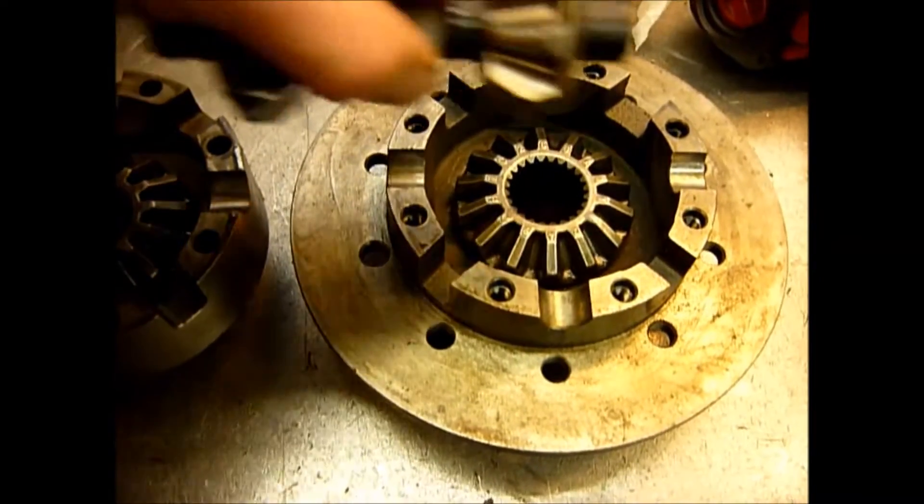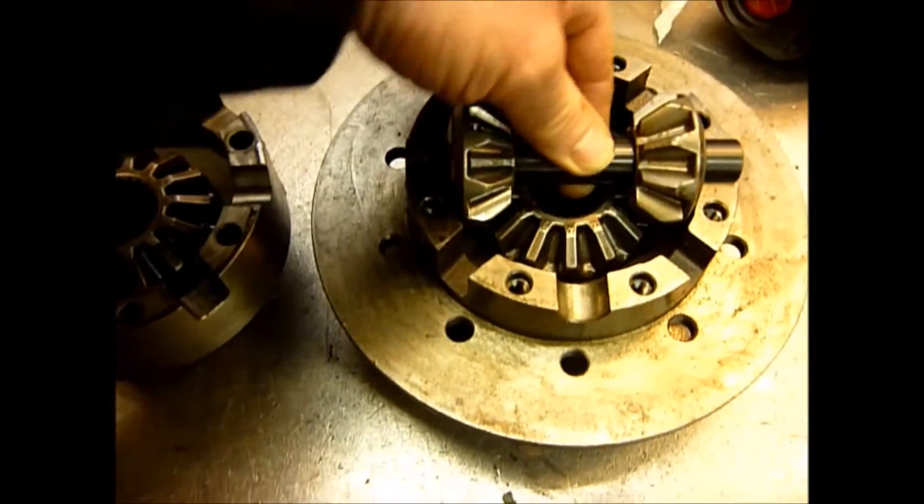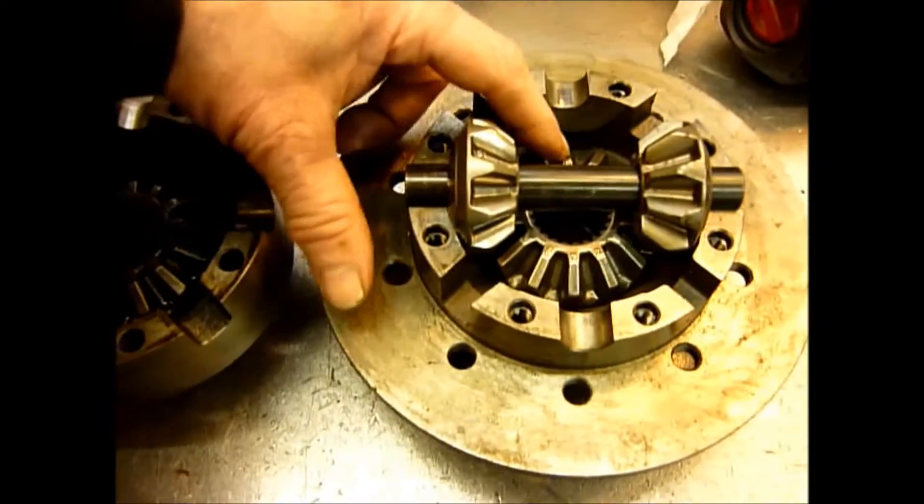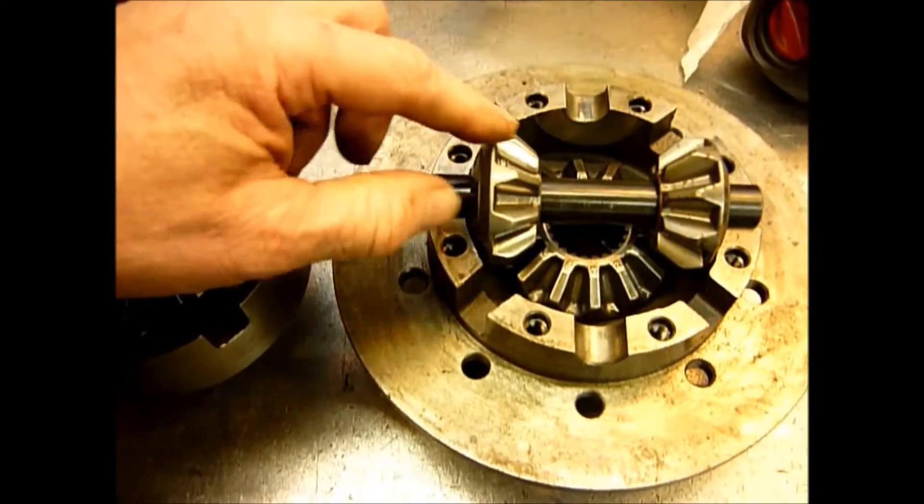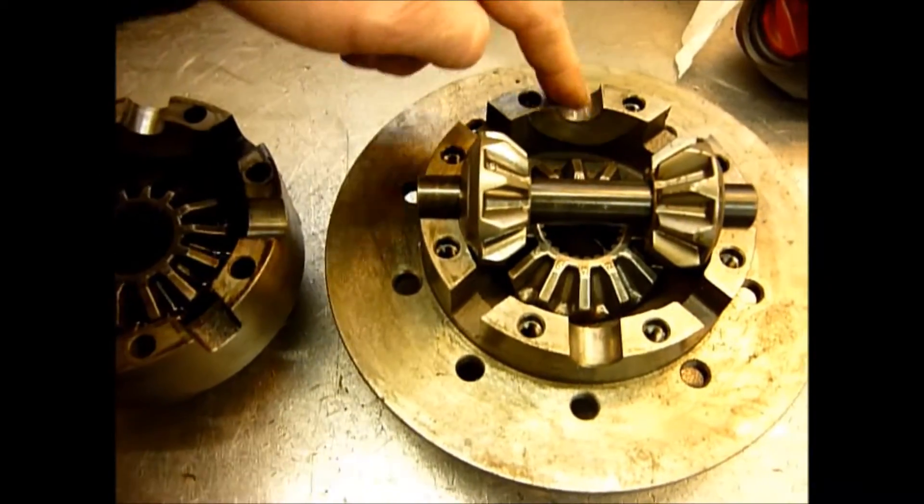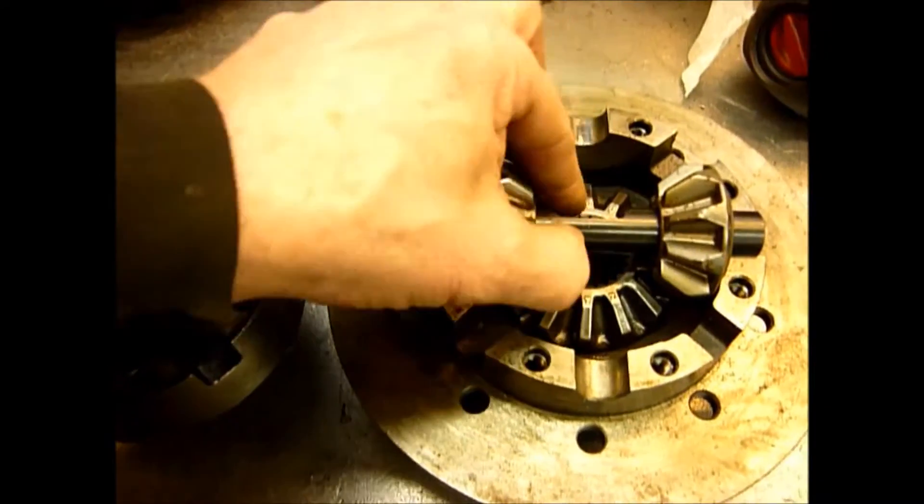So on the normal two pin unit, as you saw before, what you'd actually have is a pin running through from side to side. You'd have a gear at the bottom, gear at the top, and your two gears on the side here. Now on a four pin unit, there's another pin that comes across this way, and the only way they get them to fit is by having a cutout.